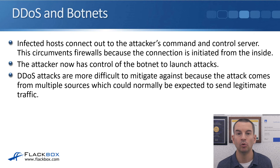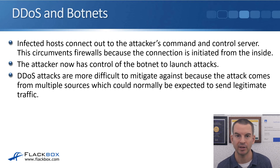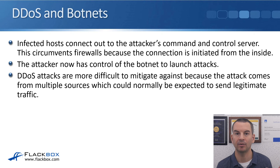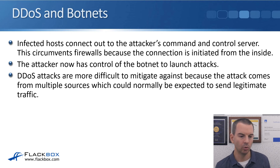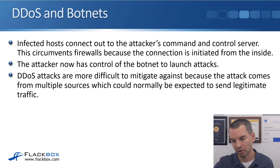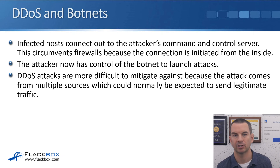With a botnet, the infected hosts connect out to the attacker's command-and-control server. This circumvents firewalls because the connection is initiated from the inside. When you inadvertently install the Trojan, your PC connects outbound to the attacker's server — the firewall allows outbound traffic — and then the attacker sends control traffic back in as return traffic, allowing them to control your PC and launch denial of service attacks from there.